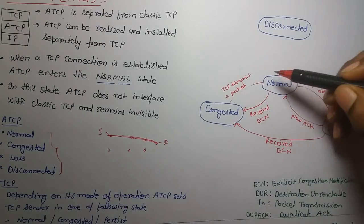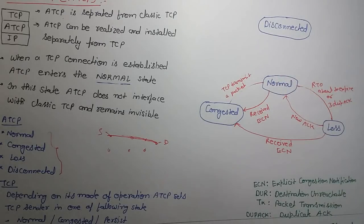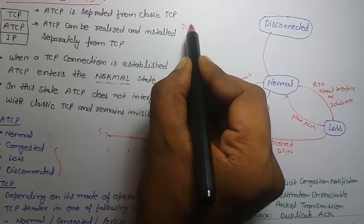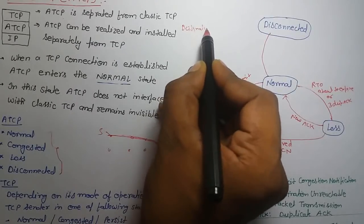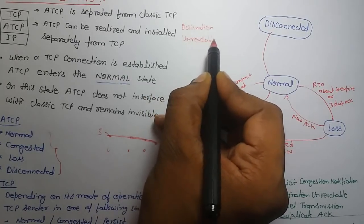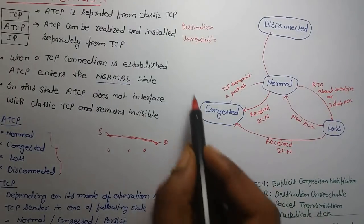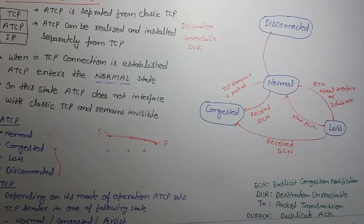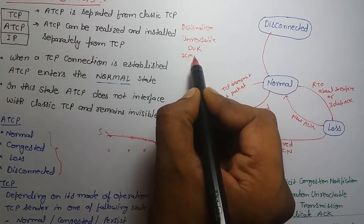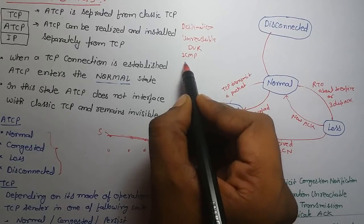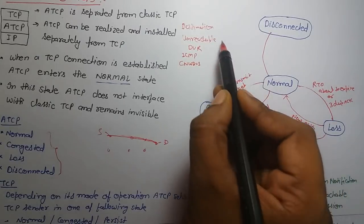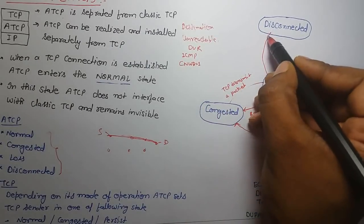If it is in normal state and the destination is unreachable, this means the destination is unreachable. If the destination is unreachable and the congestion window is set to 1, then it will move to the disconnected state.